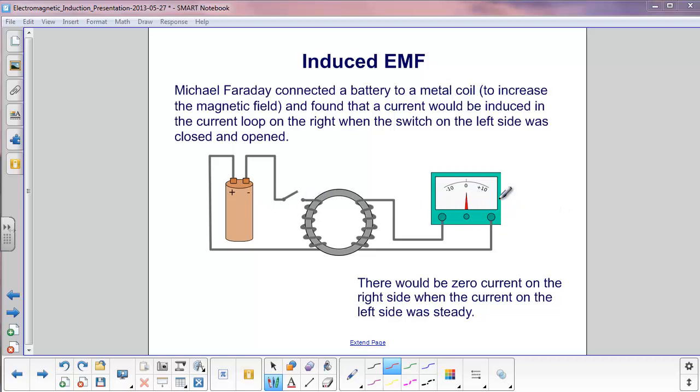He then closed the switch. He noticed a momentary spike in the current on the right side here, which then went to zero as he left the switch closed. When he opened the switch, he saw the current spike in the other direction and then go to zero. So, when this current on this side was steady or zero, no current showed up here. However, when the current changed, then you would have a current.